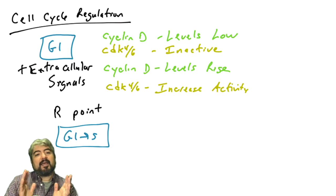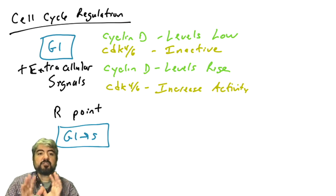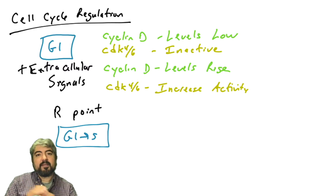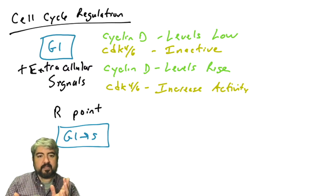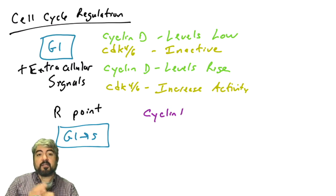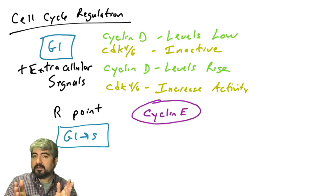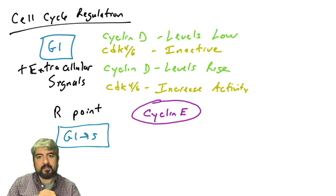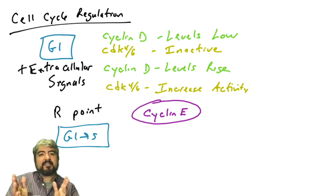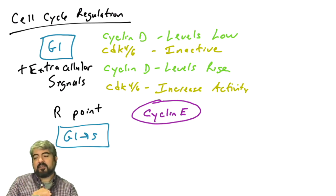We're going to talk about how CDK4 and 6 pushes cells past the restriction point, telling the cells to go into S phase and through the cell cycle. We're going to introduce a lot of proteins and interactions between these proteins and some genes, so there's a lot to keep track of in this video.